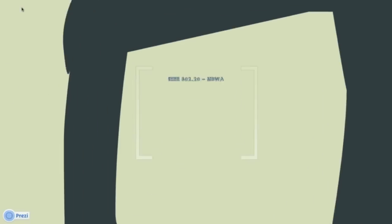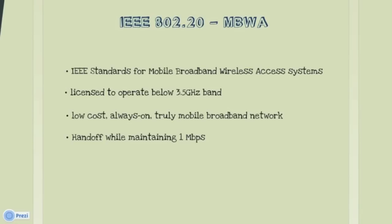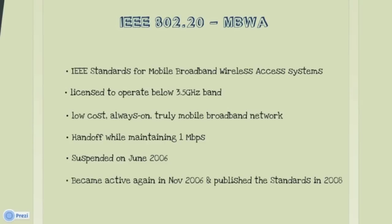802.20 defines a table standard for mobile broadband wireless access. It was licensed to operate at frequency bands below 3.5 GHz. It aimed to provide low-cost, always-on internet access so users would not have to spend time connecting to the network, providing truly mobile on-the-go broadband access. It supported handoff even for vehicles moving at speeds as high as 250 km/h, maintaining a data rate of 1 Mbps. In June 2006, it was suspended due to allegations that the chairperson was favoring Qualcomm. The group became active again in November 2006 and published the standard in 2008, but later in 2011, the standard was put on hibernation due to lack of activity.